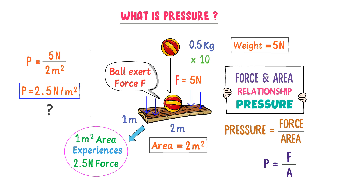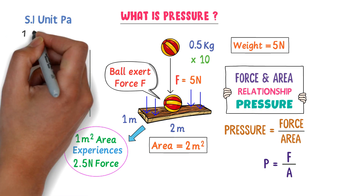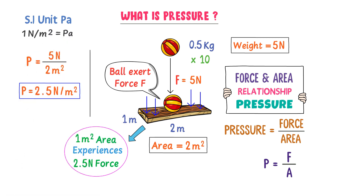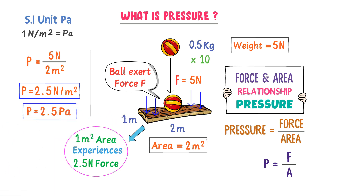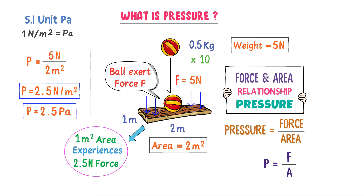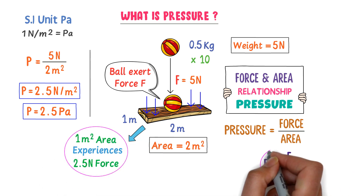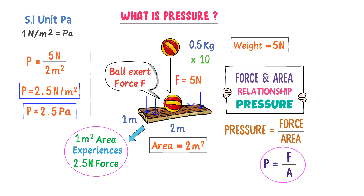Also remember that the SI unit of pressure is Pascal. 1 Newton per meter squared is equal to 1 Pascal. So I can write 2.5 Newton per meter squared or 2.5 Pascal. To conclude, pressure tells us how much force is exerted on 1 meter squared area, and P is equal to force divided by area.